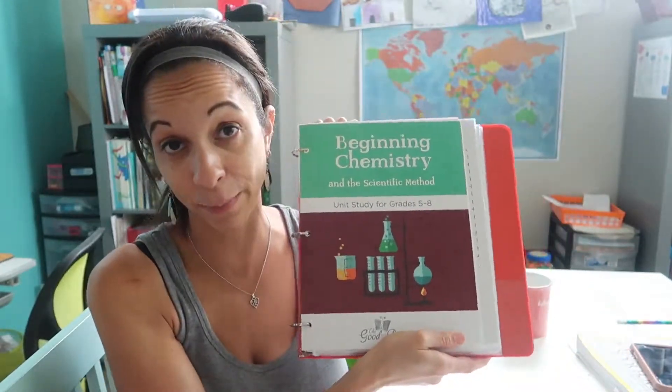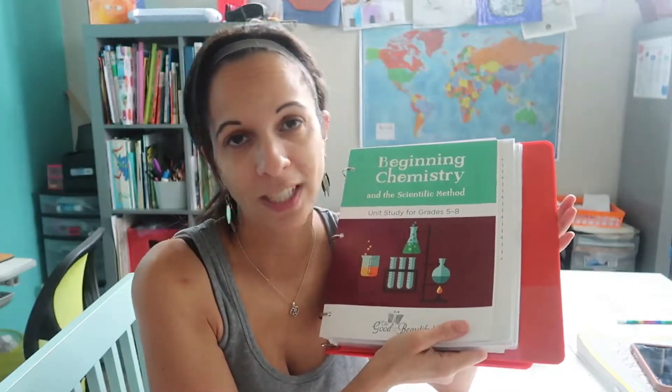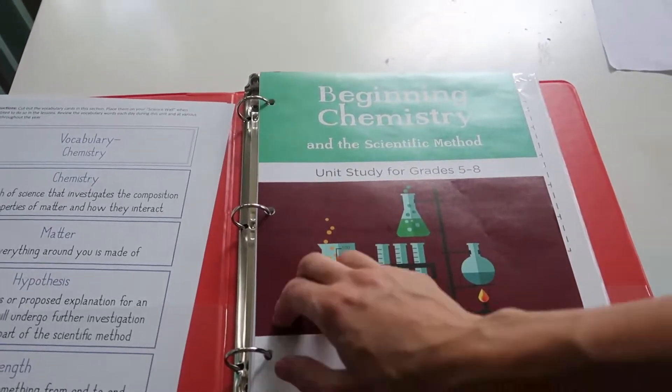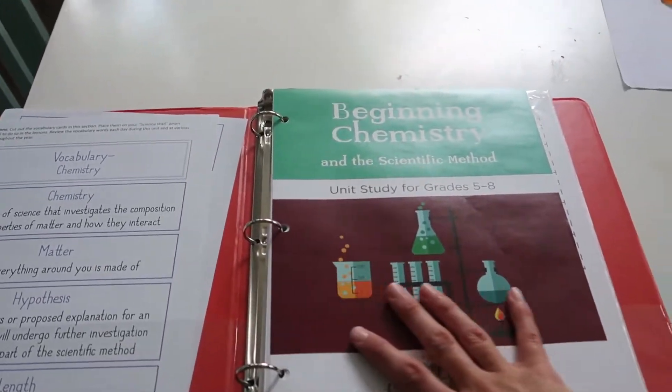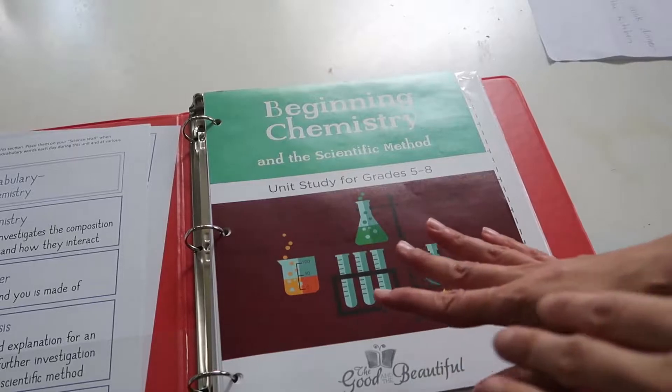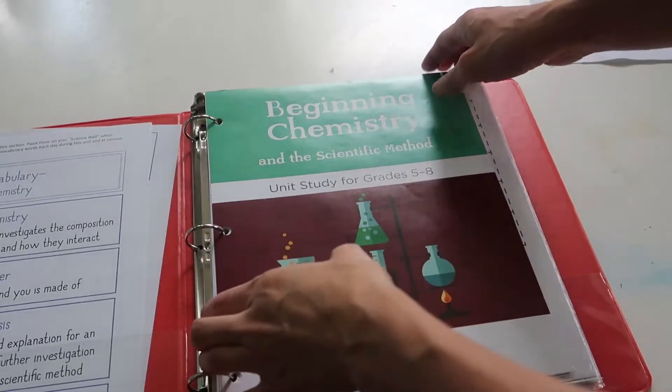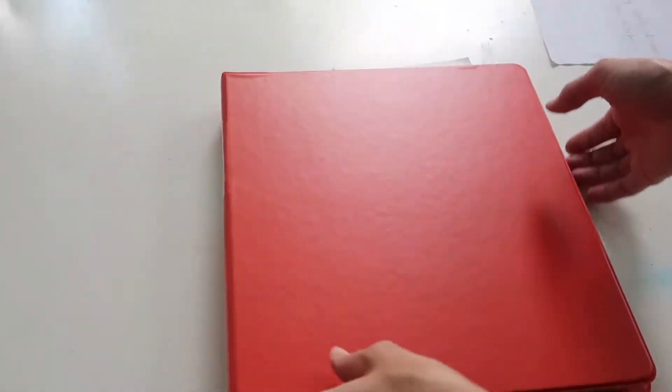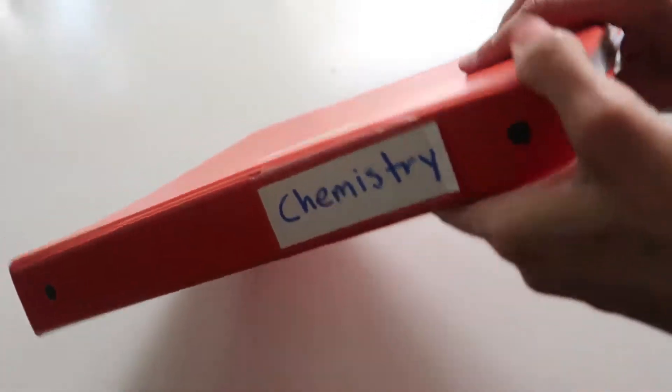Today I'm going to review for you the Good and the Beautiful's beginning chemistry unit and I'm going to show you briefly how I put my Good and the Beautiful science unit. So here is the Good and the Beautiful beginning chemistry. I also told you that I was going to show you how I store my units. So I hole punch them, I buy them printed already and then I hole punch them and I put them in a 1 inch binder and I just label them here on the side.